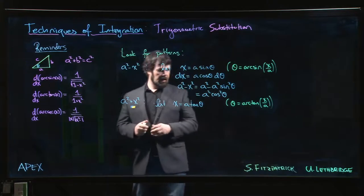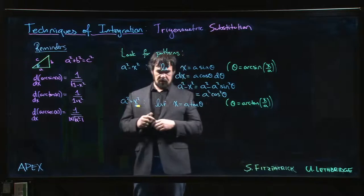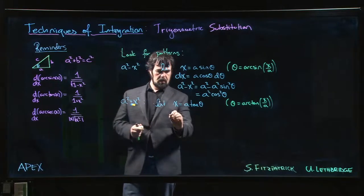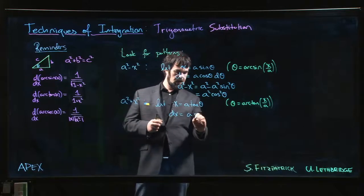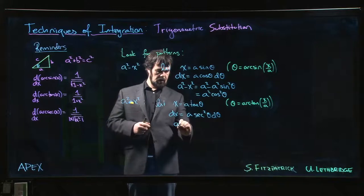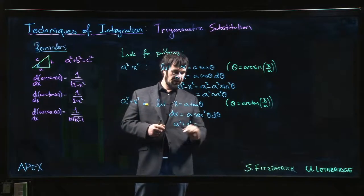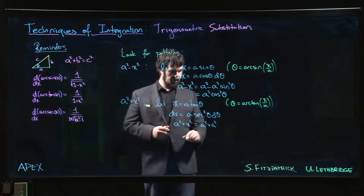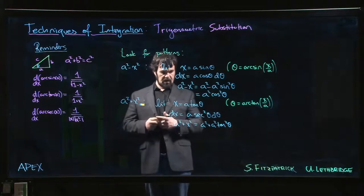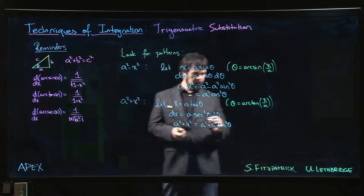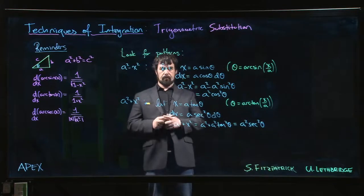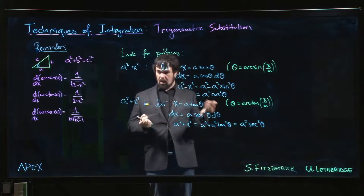Arc tan has a range from minus pi over 2 to pi over 2, not including the endpoints. So if we do that, then dx is going to be a times secant squared theta d theta. And when I do a squared plus x squared, a squared plus x squared is now a squared plus a squared tan squared theta. Factor out the a squared, we have 1 plus tan squared theta. 1 plus tan squared, we know that that's equal to secant squared. So we get a squared secant squared theta.